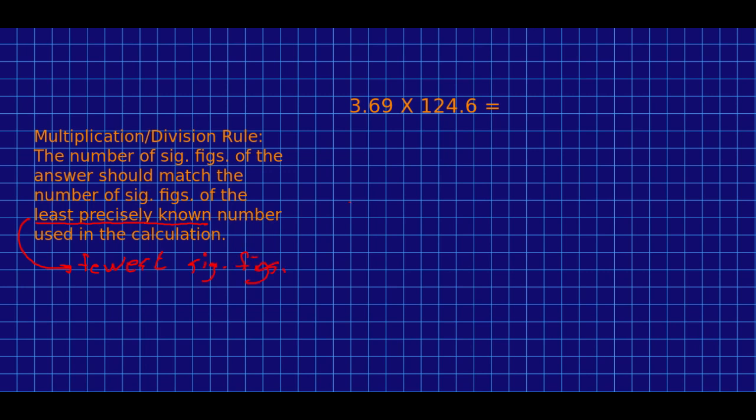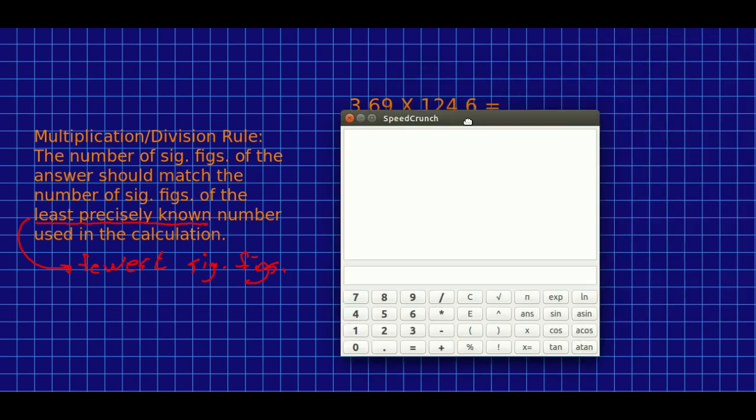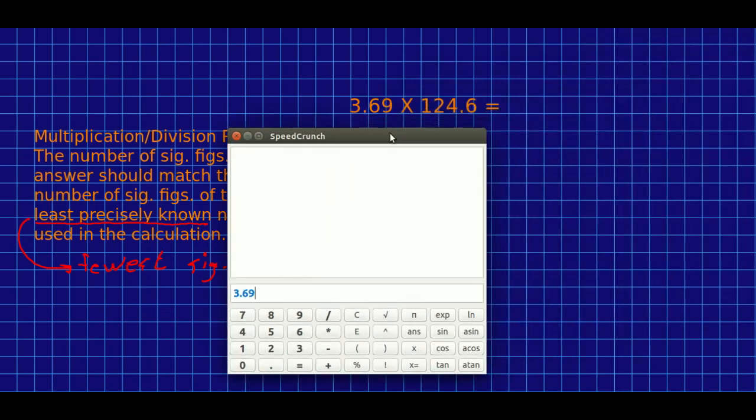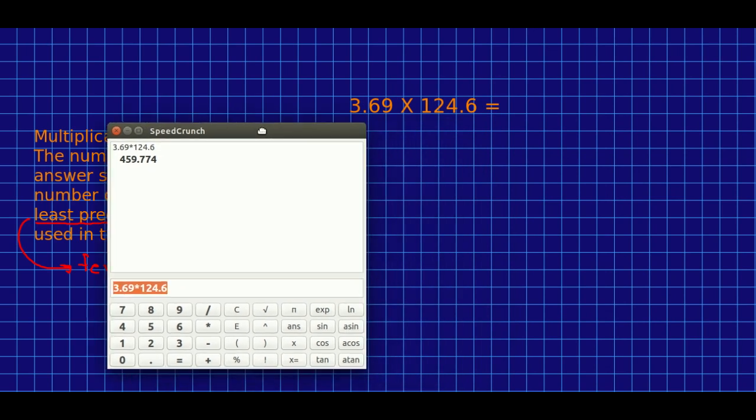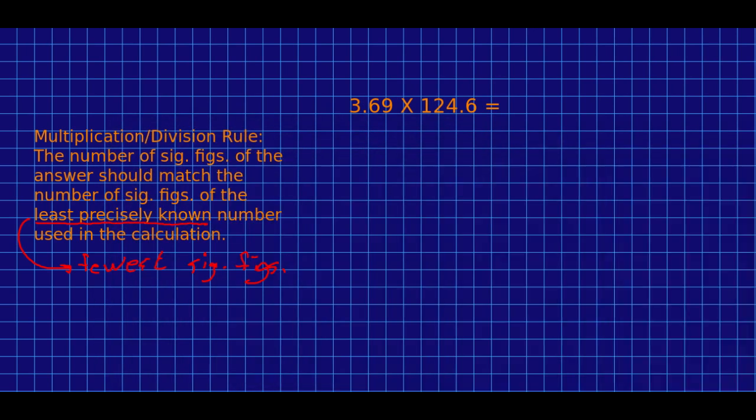So let's do this calculation, 3.69 times 124.6. And the calculator says 459.774. Okay, now what? Well, our least precisely known number is here. It only has three sig figs.